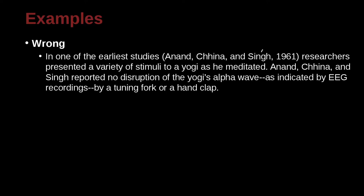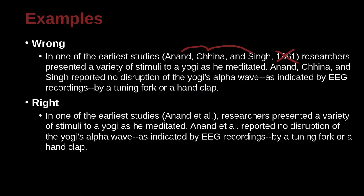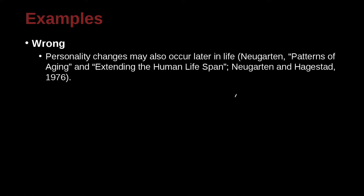In one of the earliest studies, Anid and Sheena, 1961, researchers presented a variety of stimuli to a yogi as he meditated. Anid, Sheena, and Sign reported no disruption of the yogi's alpha wave as indicated by EEG recording. We have two sentences referencing the same paper. The year is wrong — MLA doesn't use years. Also, with three or more authors in MLA, you use et al. even the very first time in the paper, which is different from APA style.